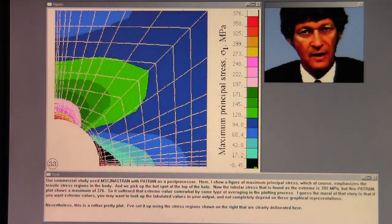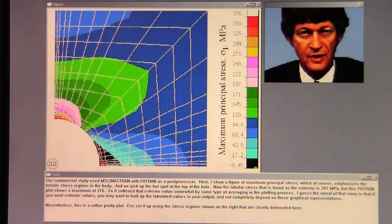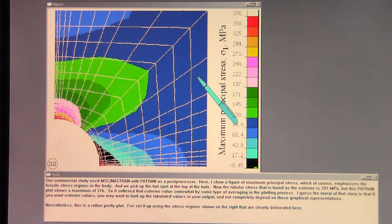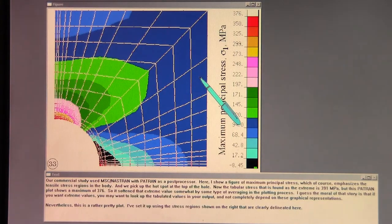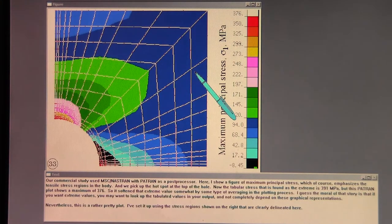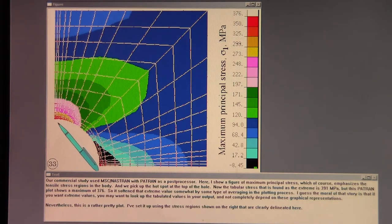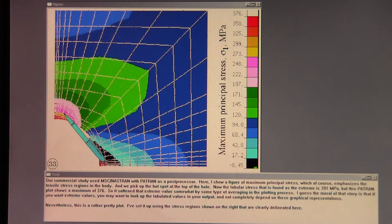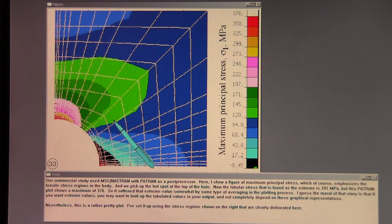Our commercial study used MSC Nastran with Patran as a post processor. Here I show a figure of maximum principal stress which of course emphasizes the tensile stress regions in the body. And we pick up the hot spot at the top of the hole. Now the tabular stress that is found, the extreme was 391 megapascals. But this Patran plot shows a maximum of 376. So it's softened that extreme value somewhat by some type of averaging in the plotting process. I guess the moral of that story is that if you want extreme values, you may want to look up the tabulated values in your output and not completely depend on these graphical representations.